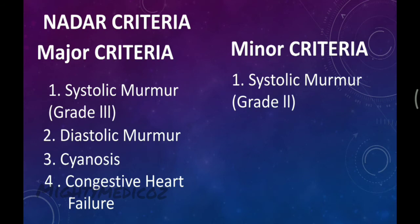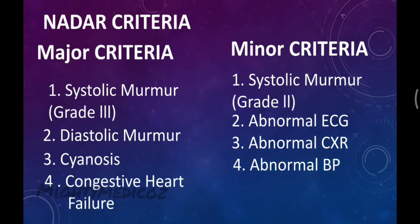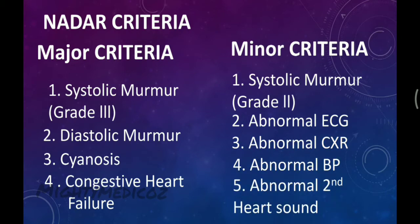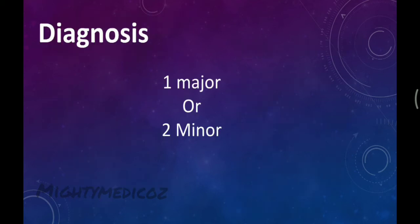The 5 minor criteria are: systolic murmur grade 2 or less, abnormal ECG, abnormal chest X-ray, abnormal blood pressure, and abnormal second heart sound. To diagnose congenital heart disease, we need to satisfy 1 major criterion or 2 minor criteria. This is Nadas Criteria.